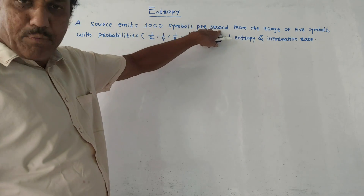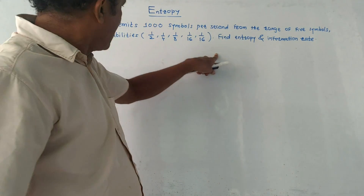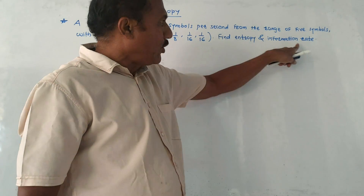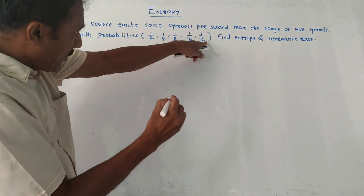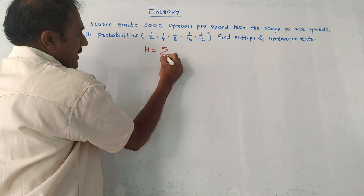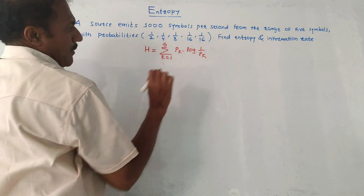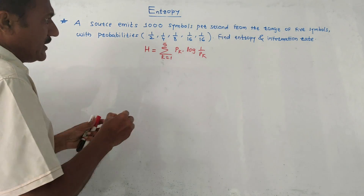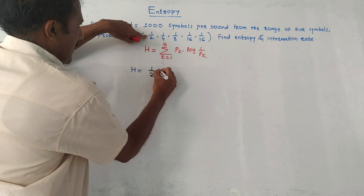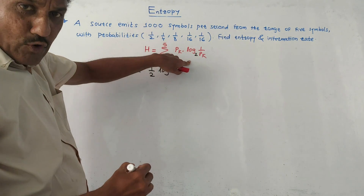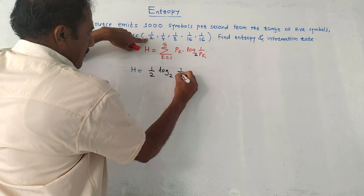Let us solve a numerical. A source emits 1000 symbols per second from a set of five symbols with probabilities 1/2, 1/4, 1/8, 1/16, and 1/16. Find the entropy and information rate. Applying the formula: H = summation from k=1 to 5 of p_k × log(1/p_k) base 2. So H = (1/2)log₂(2) + (1/4)log₂(4) + (1/8)log₂(8) + (1/16)log₂(16) + (1/16)log₂(16).